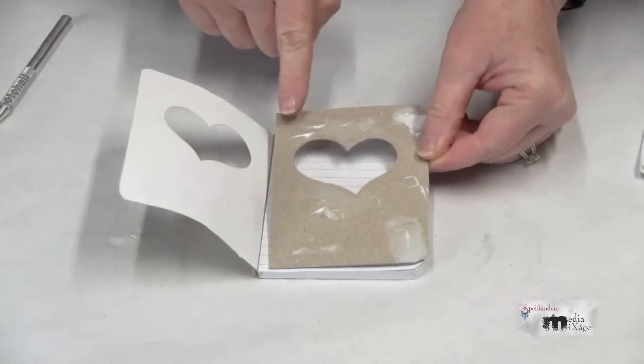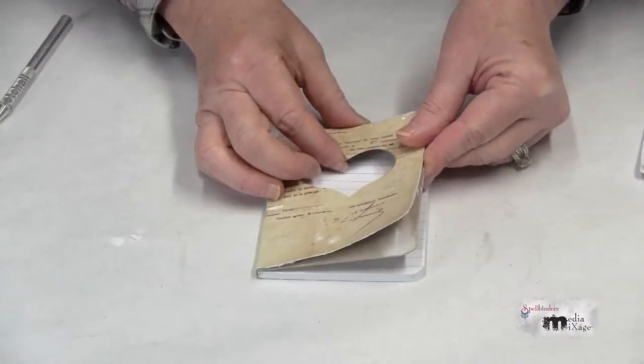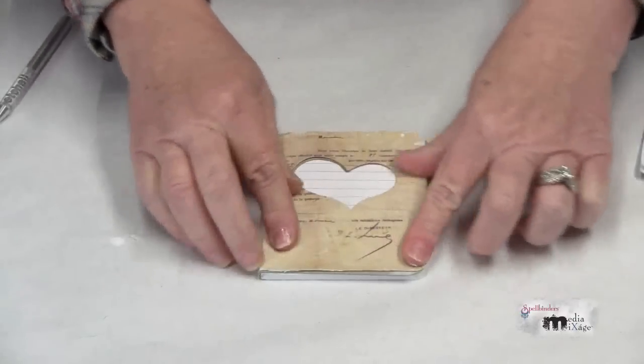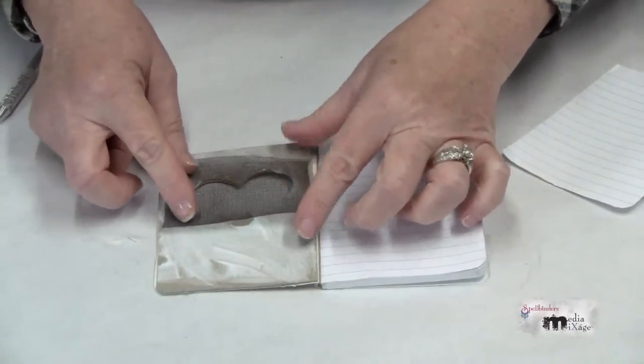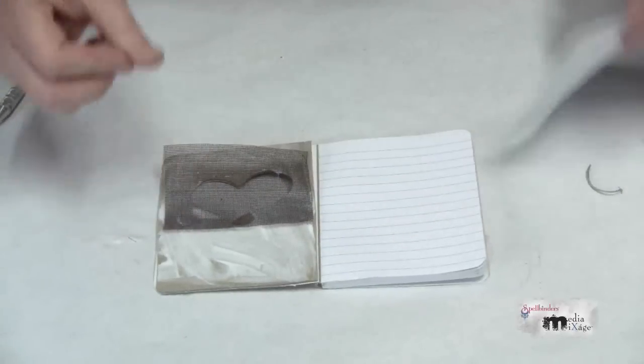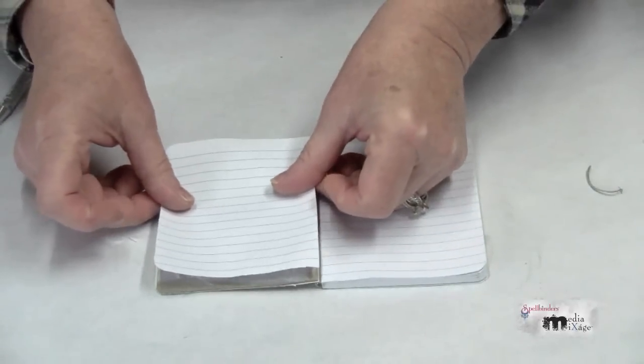I've added a little bit of glue and now I'll position the chipboard in place. I'll finish the inside of the cover by adding a piece of wire mesh and covering it with one of the pages of the book.